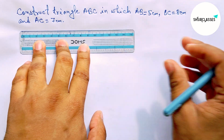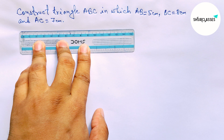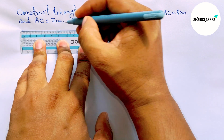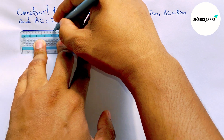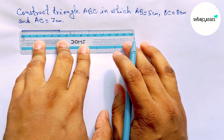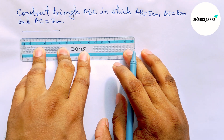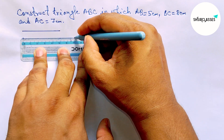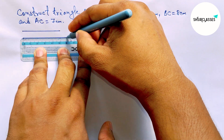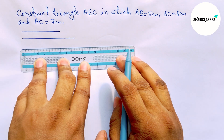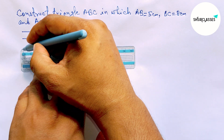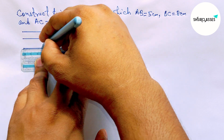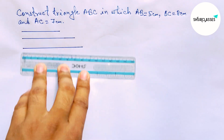First of all, let us draw the given three sides of the triangle. First, drawing a line segment of length 5 centimeters. Then drawing a 7 centimeter line segment — this is the 7 centimeter line segment. And last, drawing an 8 centimeter line segment — this is the 8 centimeter line segment.